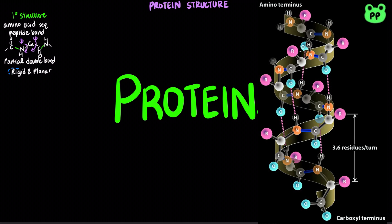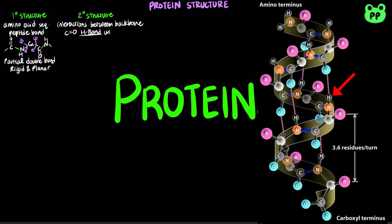Secondary structure results from interactions between repeating constituents of the polypeptide backbone, with the oxygen from the carbonyl group hydrogen bonding with the hydrogen of the amino group.